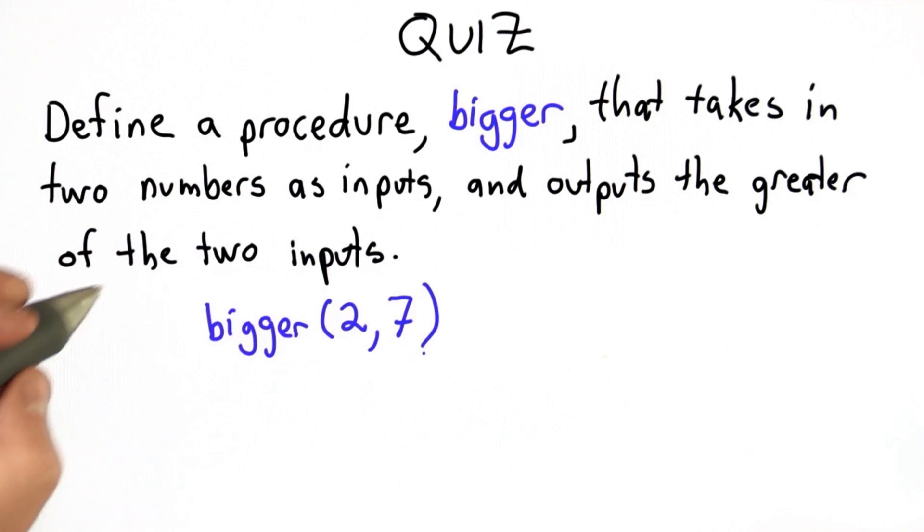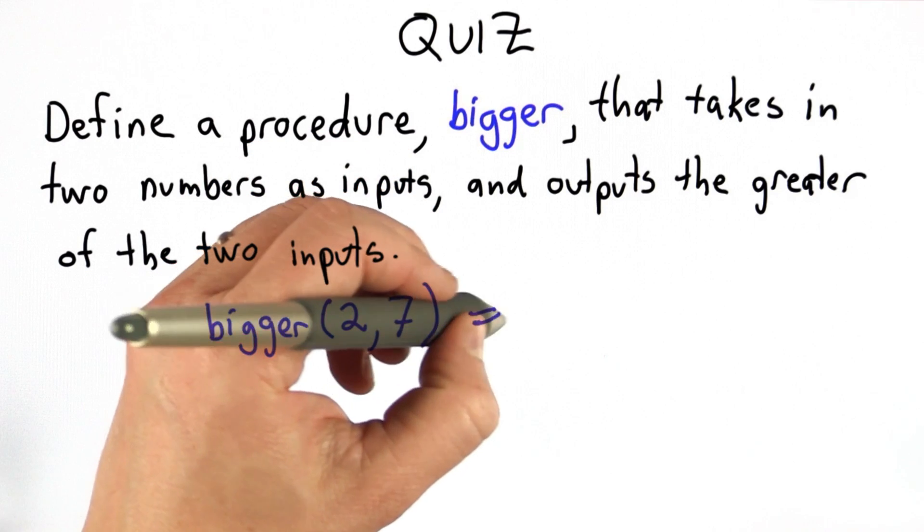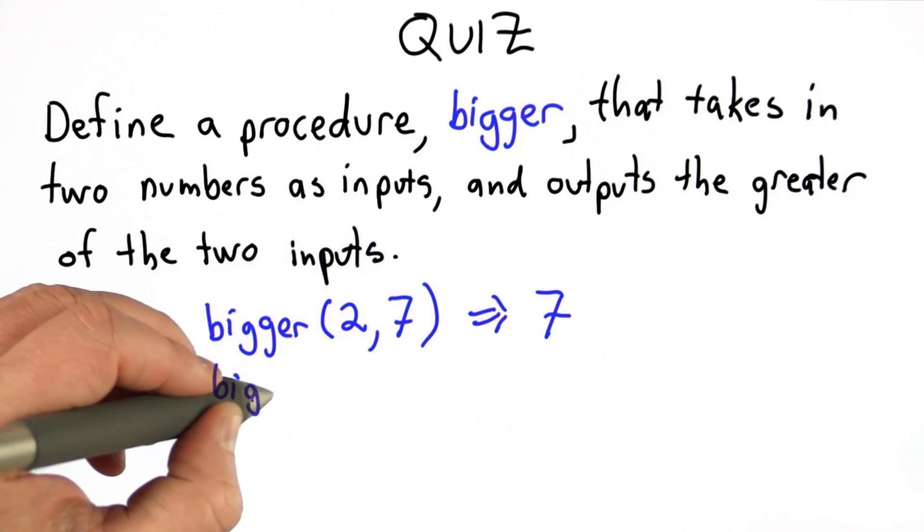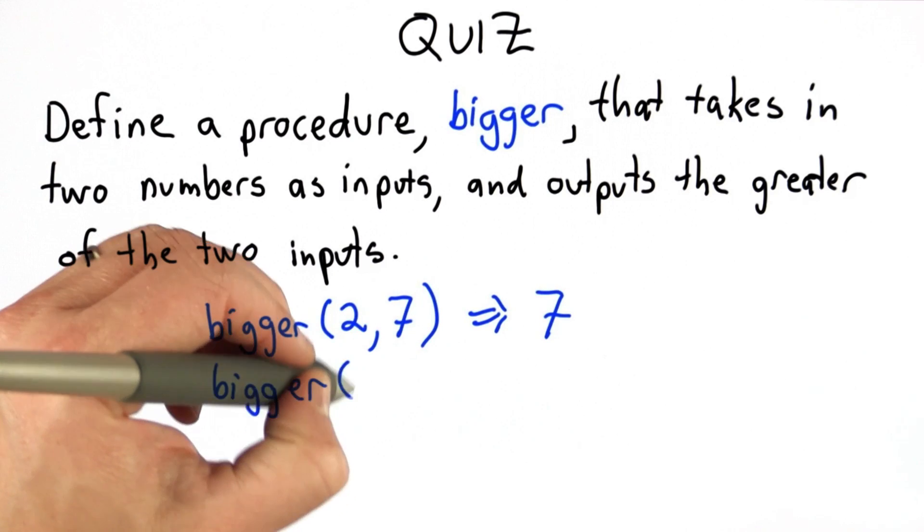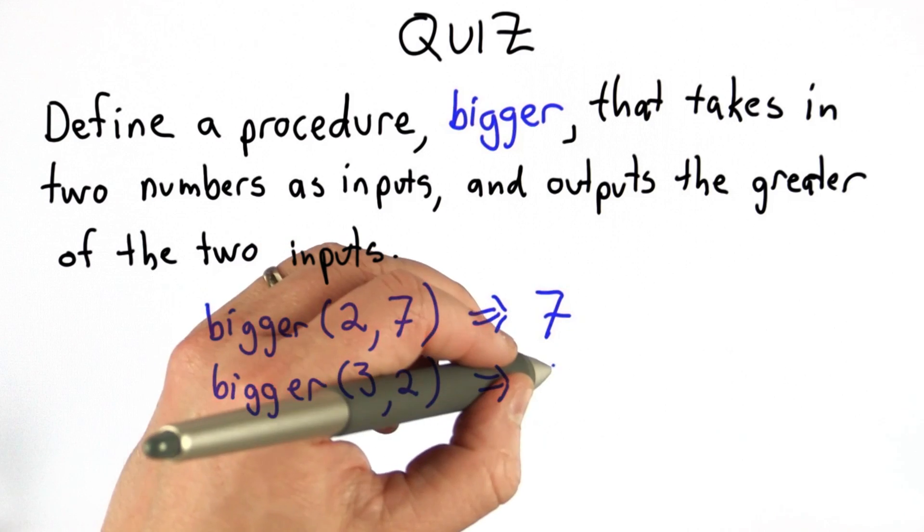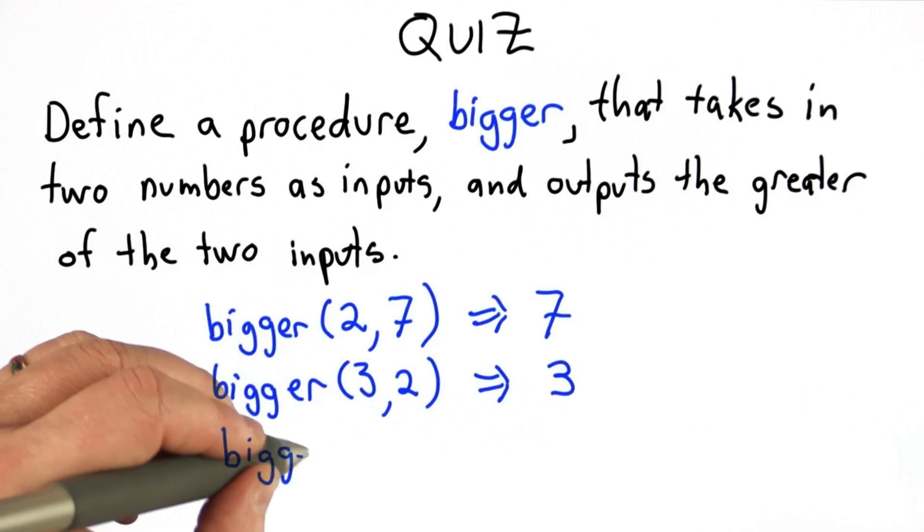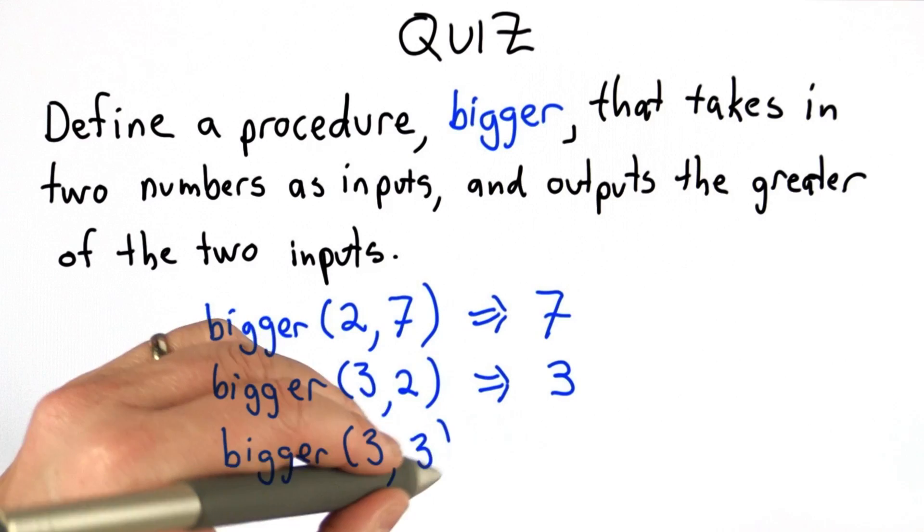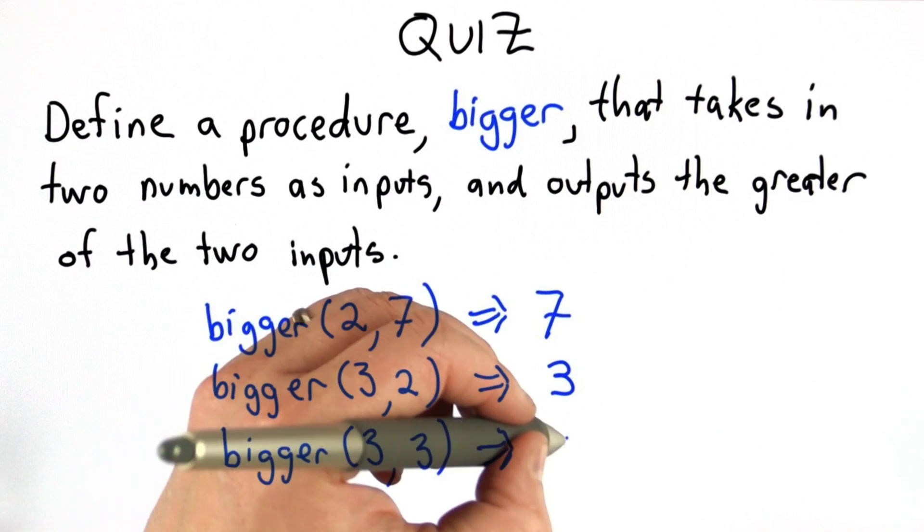So here are a few examples. If the inputs are 2 and 7, the greater input is 7, and the output should be 7. If the inputs are 3 and 2, the greater input is 3, and so the output should be 3. If the two inputs are the same, say 3 and 3, the output should be 3.